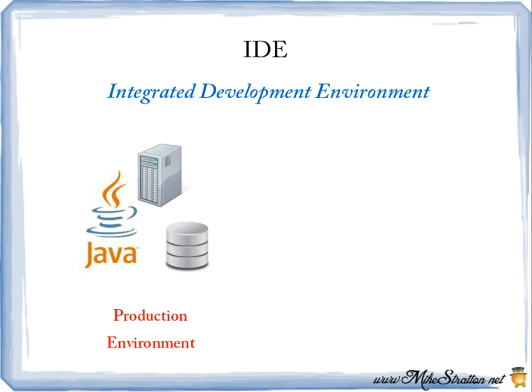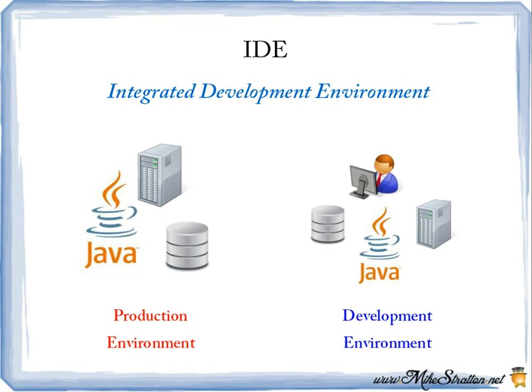Now we're going to discuss the integrated development environments. First, the production environment — when you go to any website such as Facebook or Google, this is the live production environment where the code is working. There's also the development environment, which allows a computer programmer, a team of programmers, designers, and software engineers to work on the code and the software application itself without having an effect on the live application. The key benefit of the integrated development environment is it allows you to remove any bugs offline, as opposed to dealing with them in a live environment.